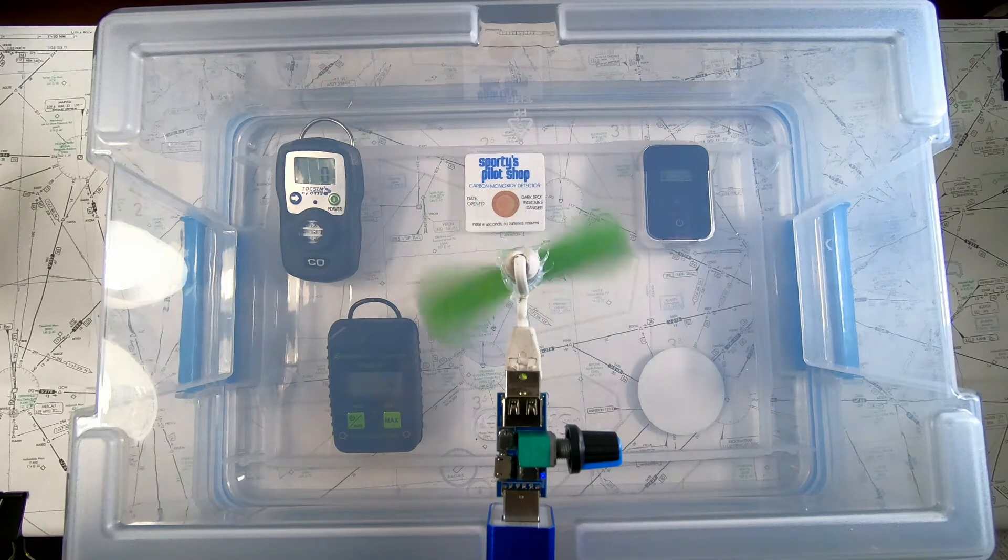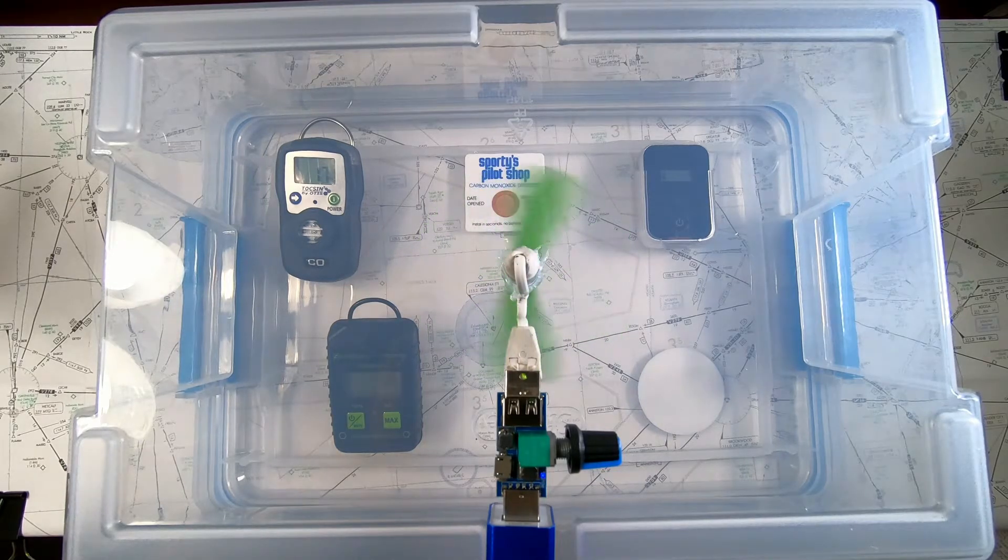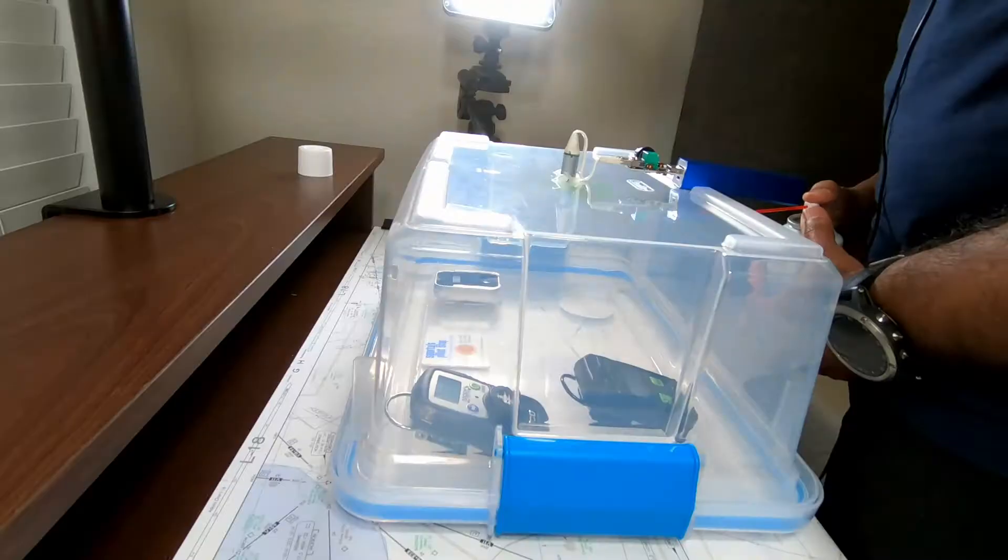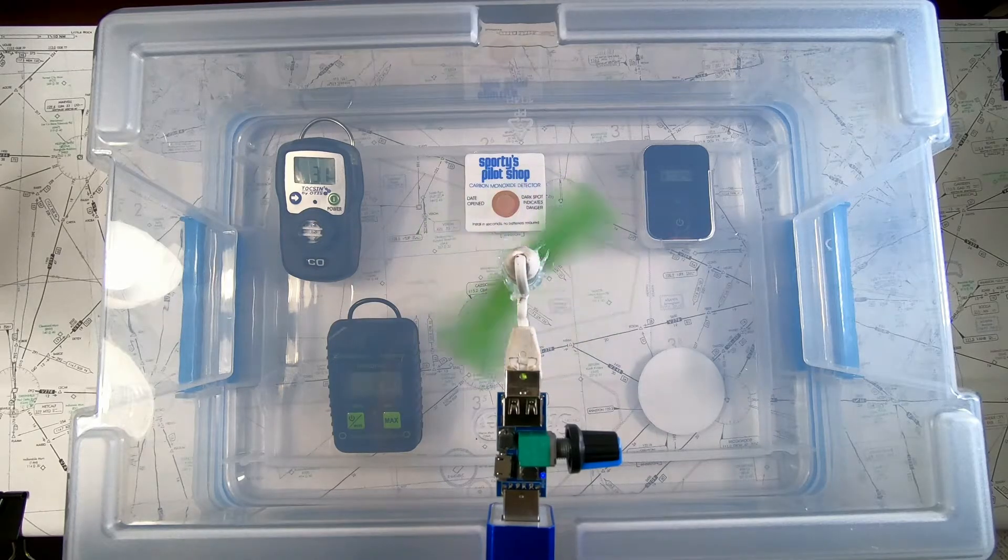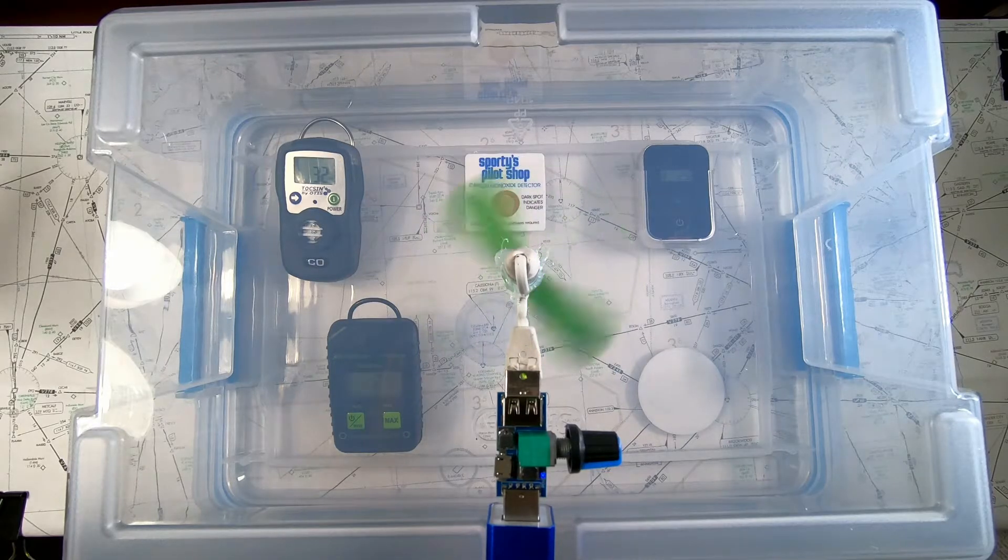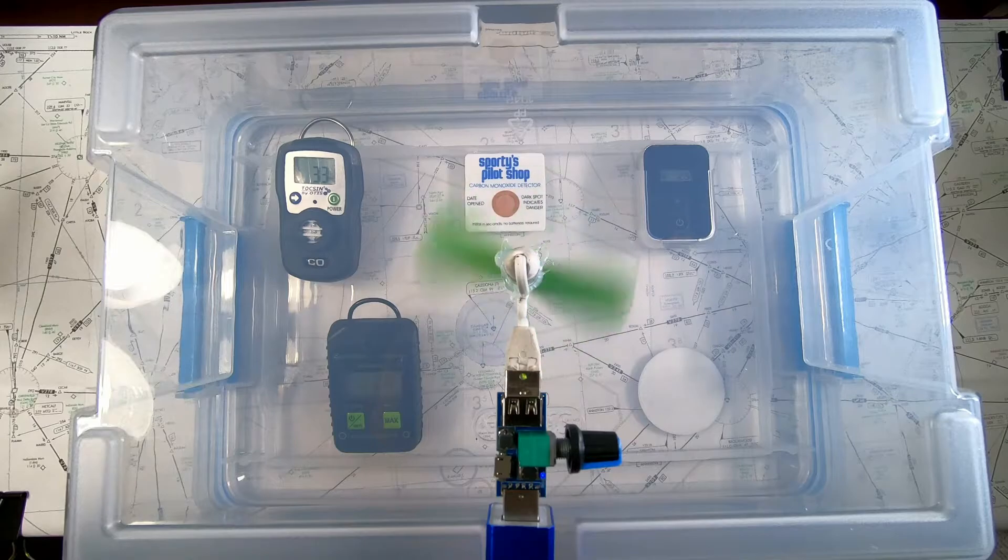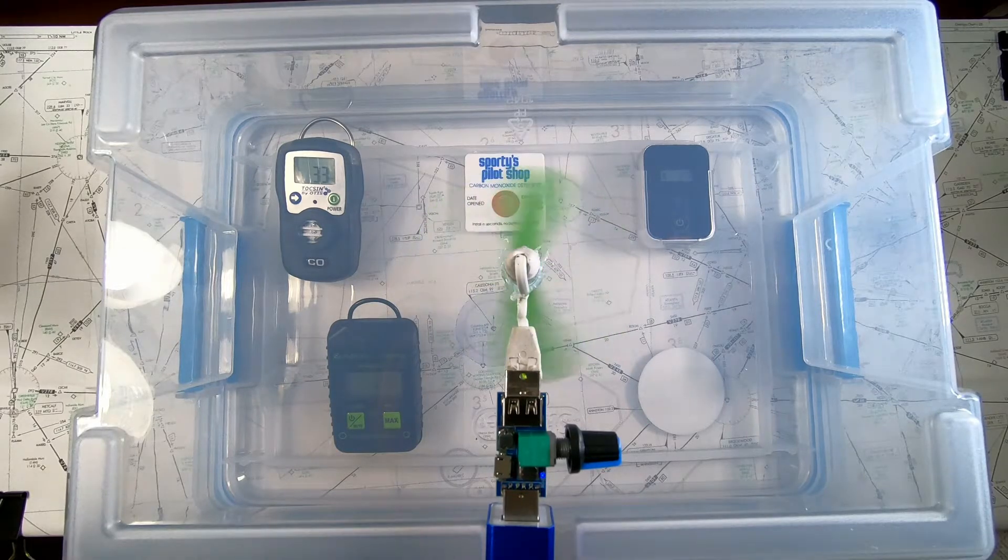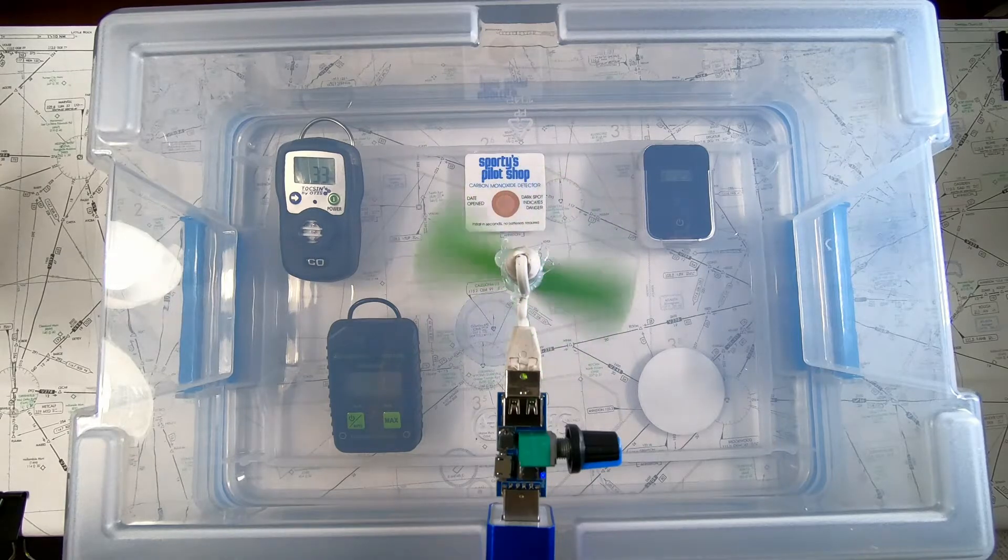So I just added one pump of carbon monoxide. All the units have started reading. I noticed that Tocsin 3 is showing a higher amount of carbon monoxide concentration compared to the other two units. And I see a slight dark spot on the Sporty's patch.